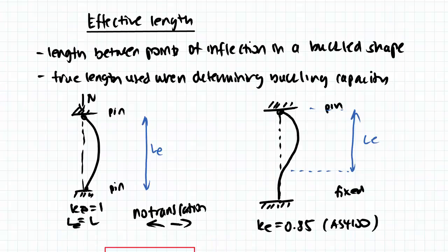Going back, effective length in terms of compression buckled shape is the length between the points of inflection in a buckled shape.